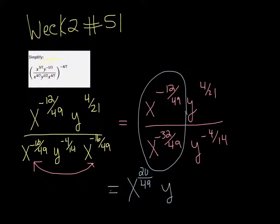And the same thing with 4 over 21, subtract negative 4 over 14. When you do that, you're going to get a 10 over 21.